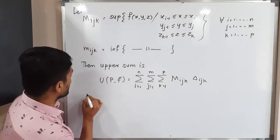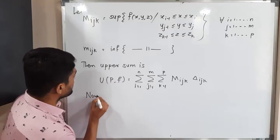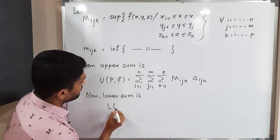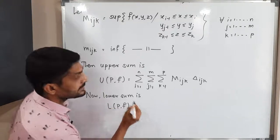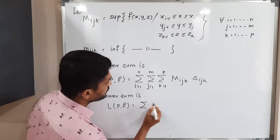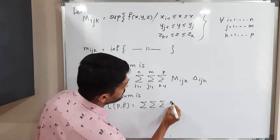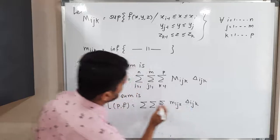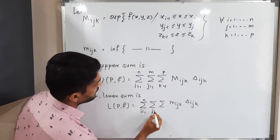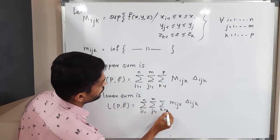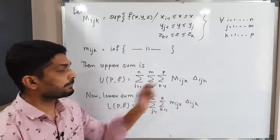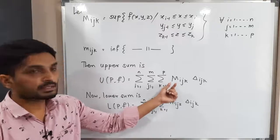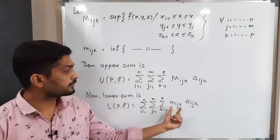Similarly, the lower sum L(P,f) equals the triple summation of small m_ijk times delta_ijk. The difference is: when we use capital M_ijk we get the upper sum, and when we use small m_ijk we get the lower sum.